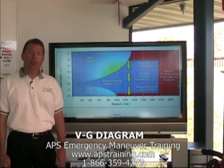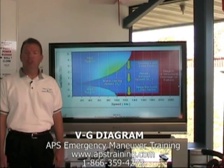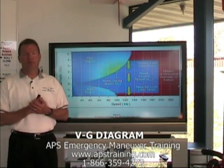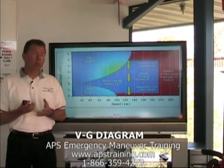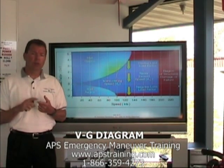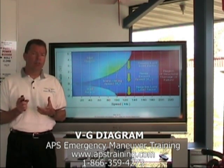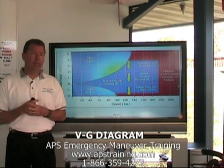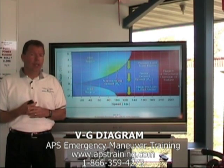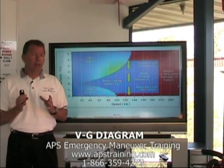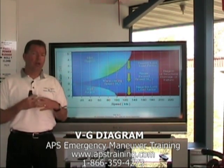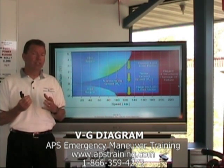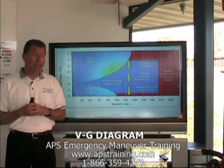Welcome back. I want to touch briefly here now on the VG diagram, or the Venn diagram as some of you may have heard it called. If you recall in our previous discussion, we talked about the total lift equation, the factors that we're concerned with as pilots, and then also we touched on the coefficient of lift curve and the coefficient of drag curve — and why those are important in our understanding of how and why we're doing the things we're doing in recovering the airplane in an upset.